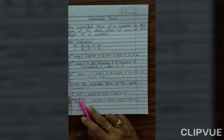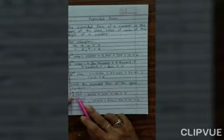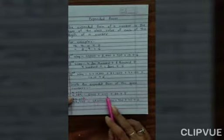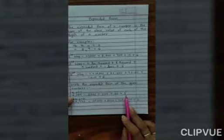So this is the expanded form of 6285: that is six thousand two hundred eighty-five. Agar hum words mein dekhen to six thousand two hundred eighty plus five, aise bhi hum bol sakte hain.